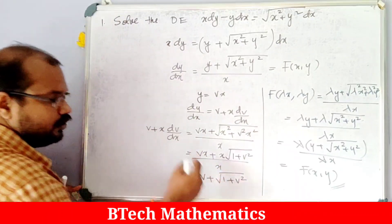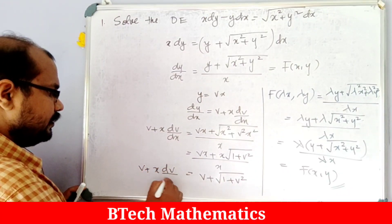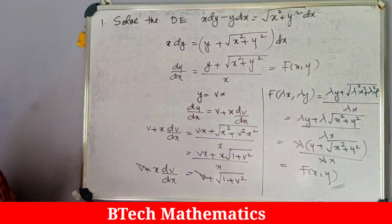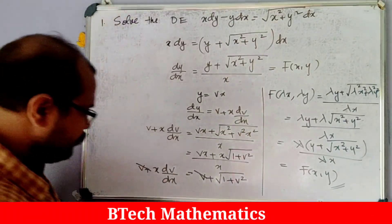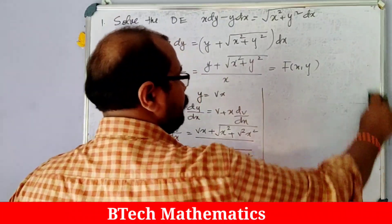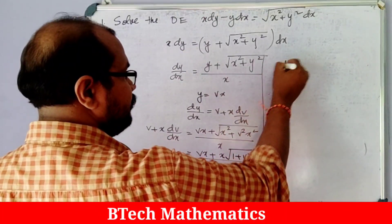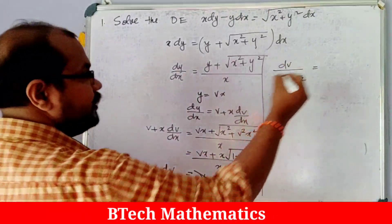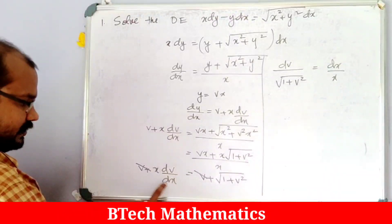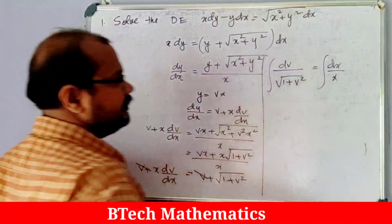Cancelling v from both sides, we get x dv/dx equal to root of 1 plus v squared. We now convert this into variable separable form. Separating variables gives dv divided by root of 1 plus v squared equal to dx divided by x. We can now integrate both sides.